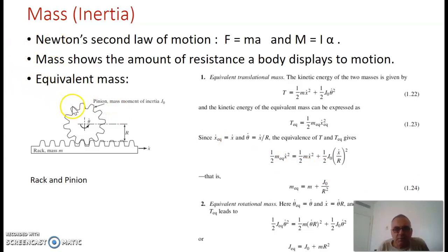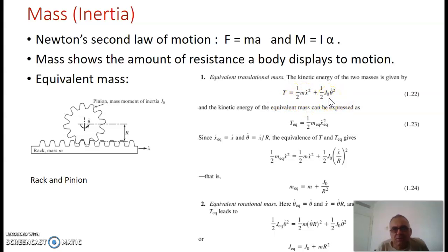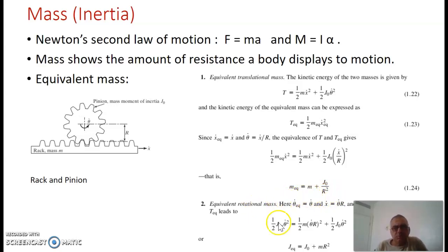For example, a rack and a pinion are combined together, where the pinion rotates and makes the mass move, or vice versa. We might want to find the equivalent mass of this system. To do that, we write the kinetic energy of the system — both translational and rotational — and use the kinematic relationship theta-dot equals x-dot over r, r being the radius. The equivalent mass is m plus J₀ over r², J₀ being the mass moment of inertia. Similarly, the equivalent rotational inertia becomes J₀ plus mr².